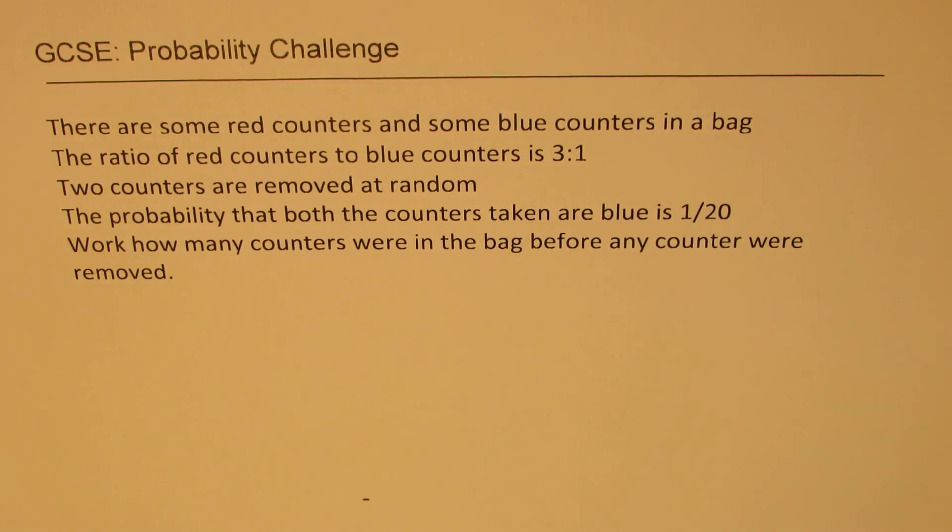The question here is based on probability. There are some red counters and some blue counters in a bag. The ratio of red counters to blue counters is 3 to 1. Two counters are removed at random. The probability that both the counters taken are blue is 1 over 20. Work how many counters were in the bag before any counter were removed.